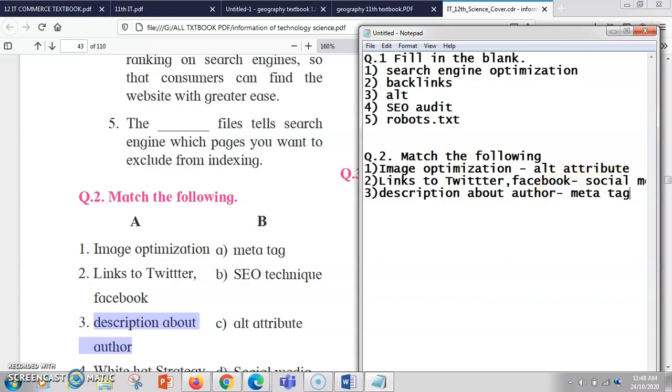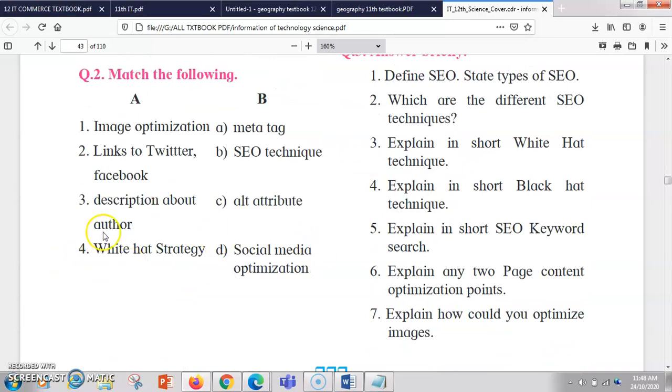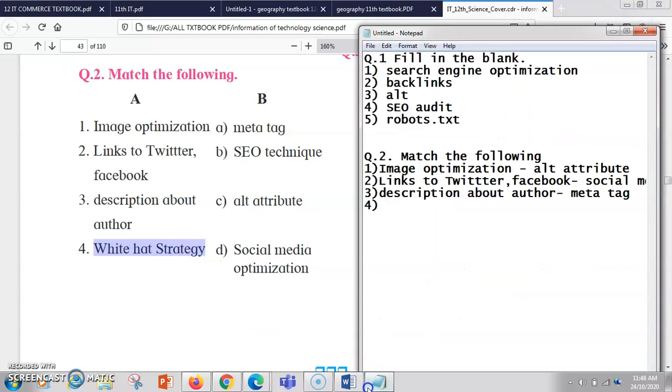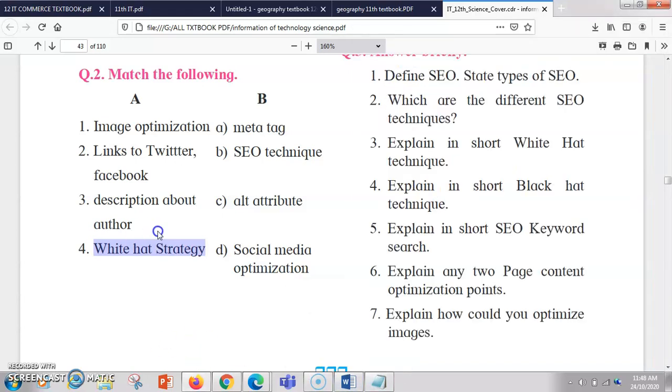Next is the fourth one, white hat strategy. So white hat is a genuine strategy which follows all the ethics of optimization. There is no type of smartness in it to fool the optimization. It goes by its ethics. So the answer is SEO technique. White hat strategy is one of the SEO techniques.